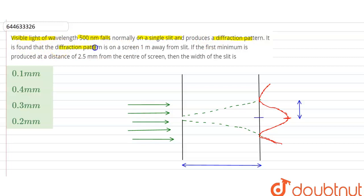It is found that the diffraction pattern is on a screen 1 meter away from the slit. If the first minimum is produced at a distance of 2.5 mm from the center of the screen, then the width of the slit is...